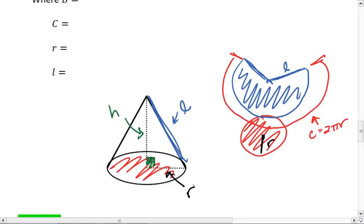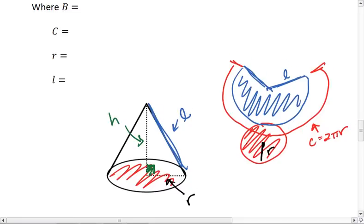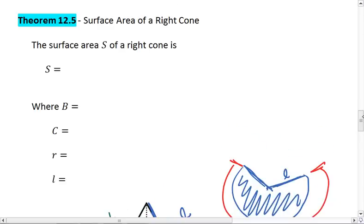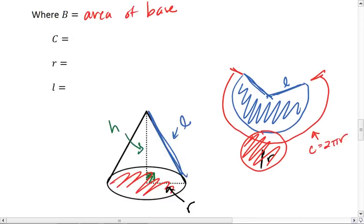I know that was a lot of geometry to kind of pull out of this 3D figure, but it's important to recognize this. So what we end up getting then is our surface area will be the area of the base, so this red area, that's part of it. So surface area equals base, where B is the area of the base, plus the area of this blue circle sector.